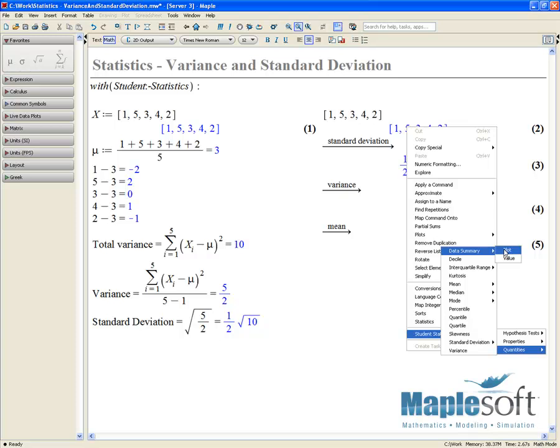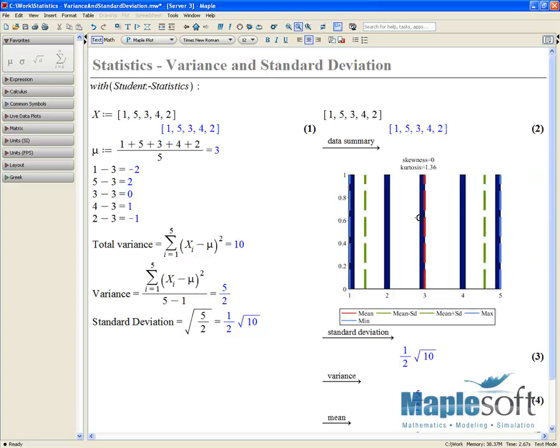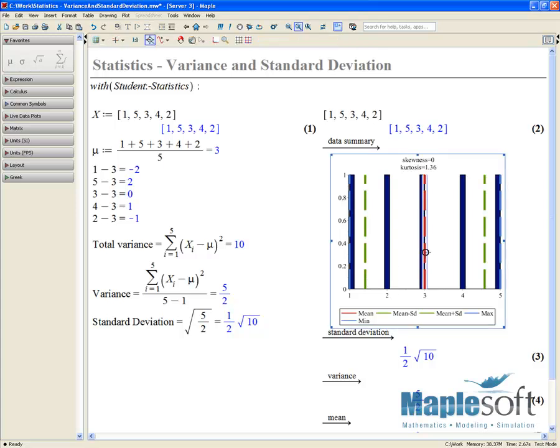So here we'll choose data summary, we'll choose plot. And now we get the plot, we can now see the mean. We can also see the mean minus the standard deviation, as well as min and max values, all shown here on this data summary plot.